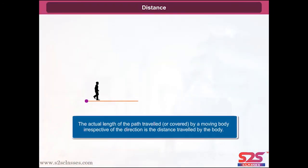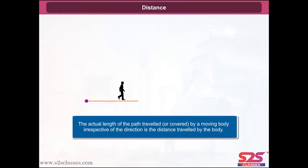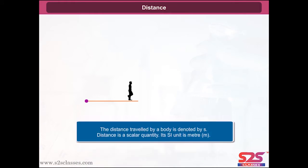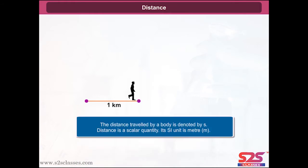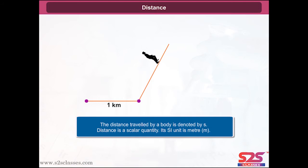Distance: the actual length of the path traveled or covered by a moving body, irrespective of the direction, is the distance traveled by the body. The distance traveled by a body is denoted by S. Distance is a scalar quantity and its SI unit is meter.